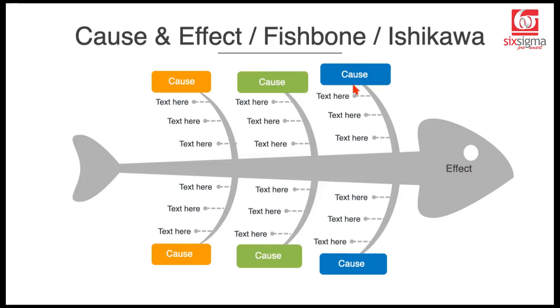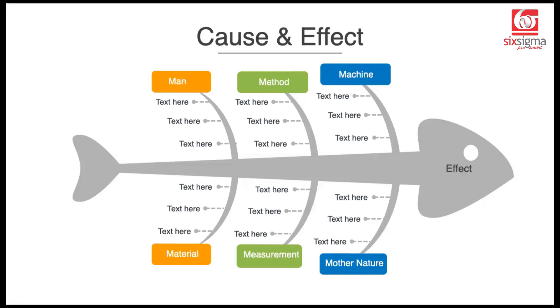To make it easy for people to remember, they have given some broad headers for the causes, and these are mostly applicable in almost all scenarios. This is called the 6M approach.